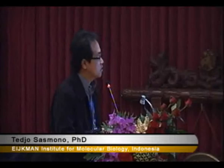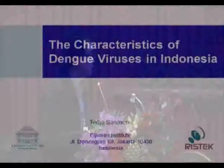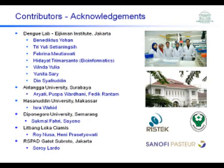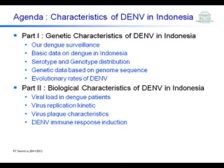My talk will consist of two parts. The first part is the genetic characterization of dengue virus in Indonesia — dengue surveillance data, distribution of serotypes, genetic data from genome sequences, and evolutionary rates. The second part will be the phenotypic characterization of the viruses in Indonesia, including viral loads, replication kinetics, characteristics of plaques, and so on.